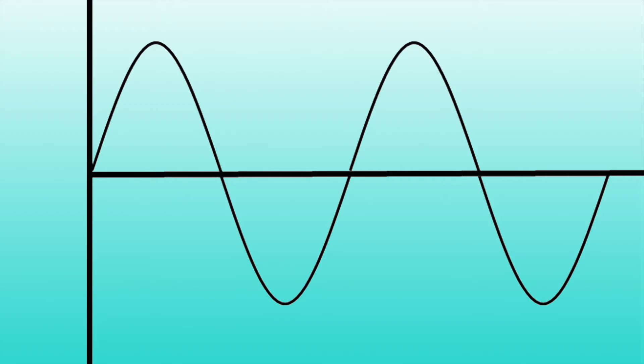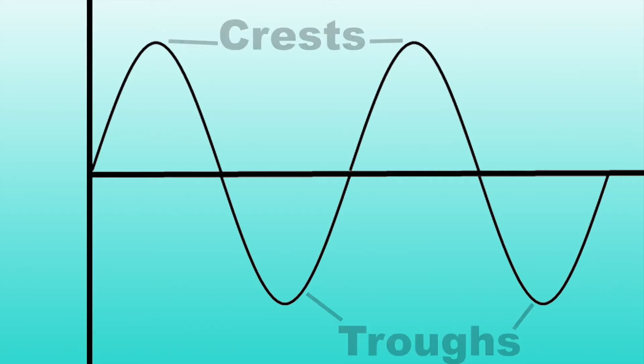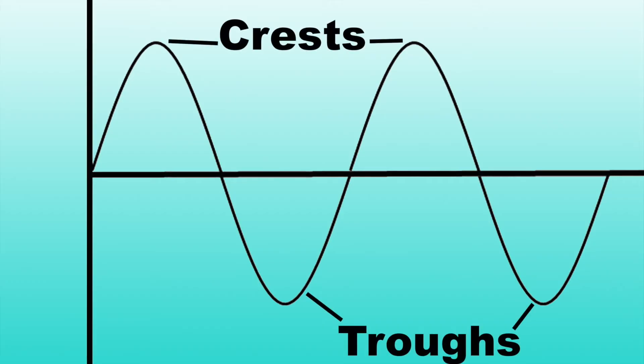First of all, there are giant peaks in every wave. The peaks above the baseline are known as crests, and the peaks below it are known as troughs.